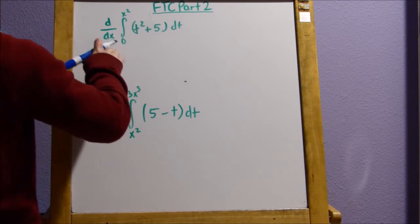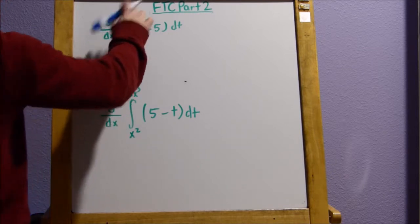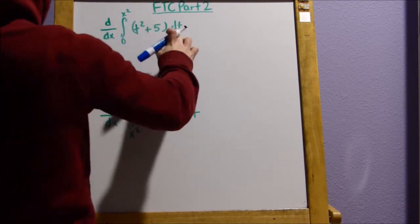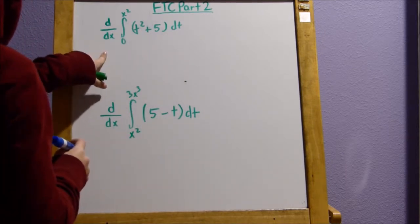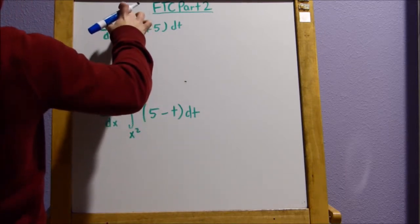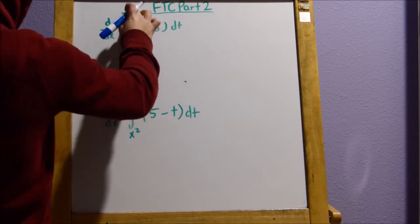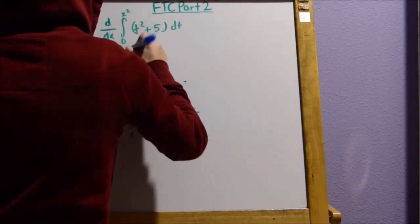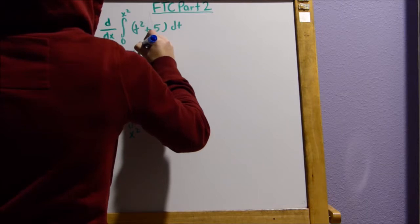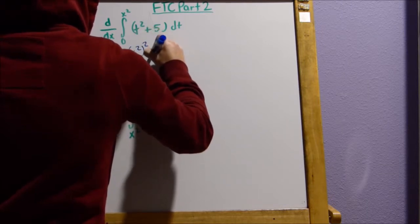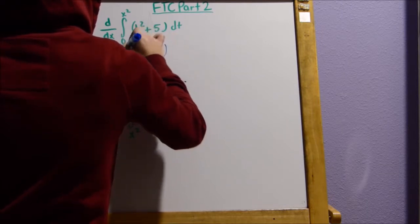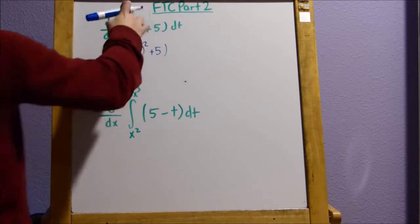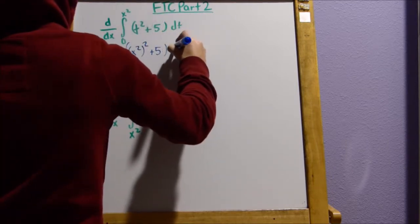So, derivative of the antiderivative from zero to x squared of t squared plus five times dt. So, what we're going to do here is we're going to substitute, we're going to put x squared for t. So, that becomes x squared squared plus five and then times the derivative of x squared. So, that would be times two x.